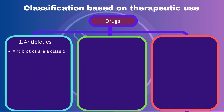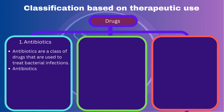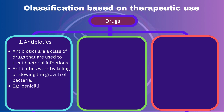Antibiotics: Antibiotics are a class of drugs that are used to treat bacterial infections. They work by killing or slowing the growth of bacteria. They include drugs such as penicillin, amoxicillin, and ciprofloxacin.